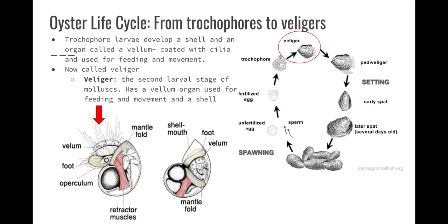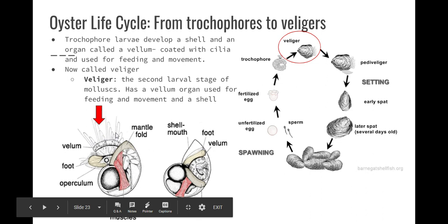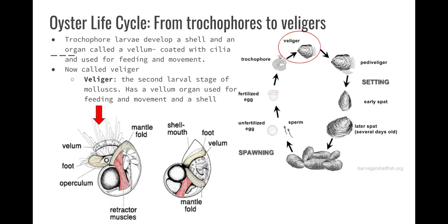From trochophore to veliger: they're going to develop a shell and an organ called a velum. The velum is coated with cilia — not primarily for locomotion like a flagella, but helping them inch around and move past things. The veliger has this velum organ that helps with both feeding and movement, and they're also developing a shell.